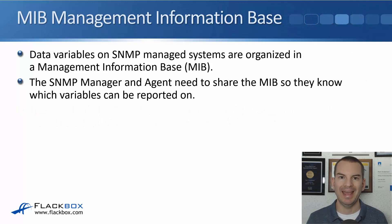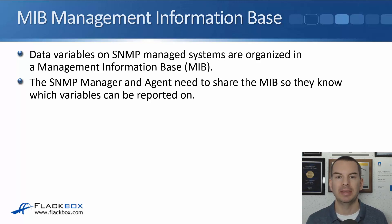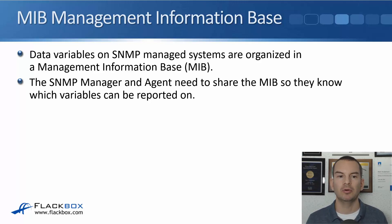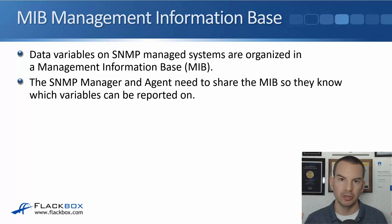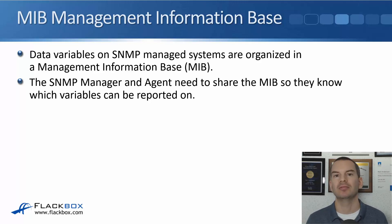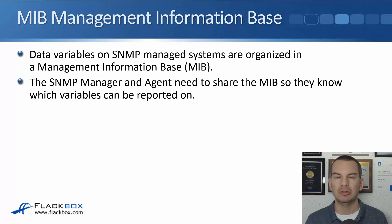An MIB — Management Information Base — is used as the database for information. Data variables on SNMP managed systems, such as the state of an interface or the state of OSPF or RIP, are organized into the MIB. The SNMP manager and agent need to share the MIB so they know which variables can be reported on. Different types of devices have different MIBs because the information you'd gather from a Windows server differs from what you'd gather from a router or switch.